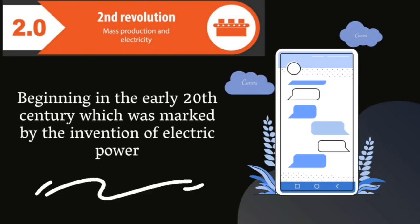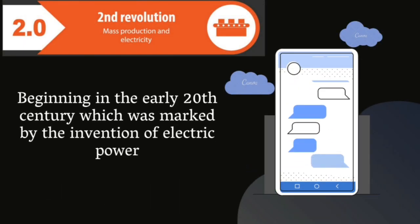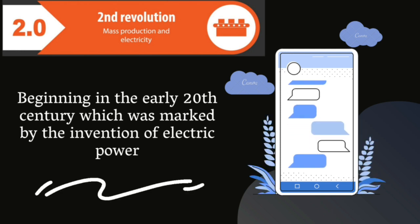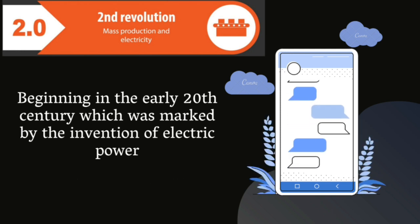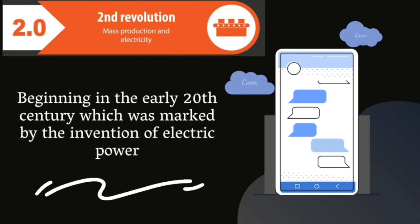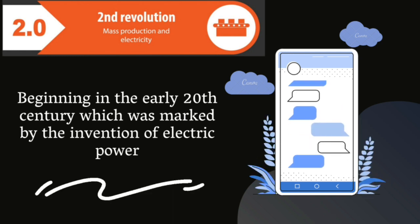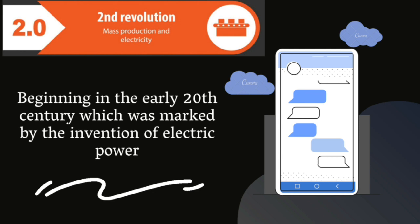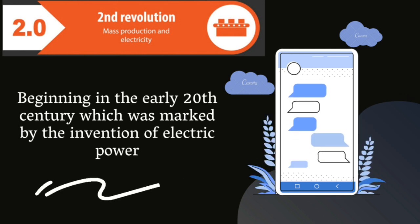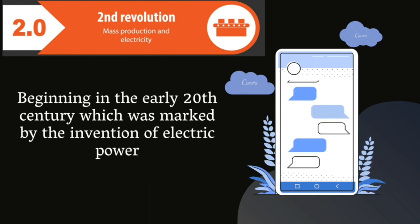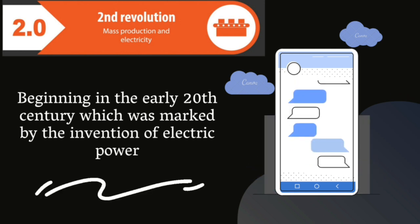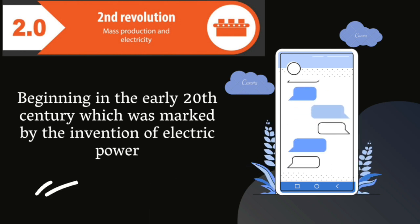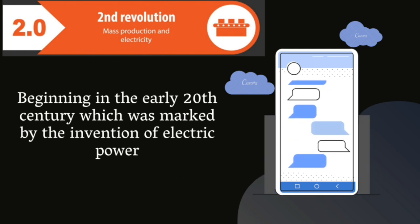The industrial revolution 2.0 occurred in the early 20th century, marked by the invention of electricity. In this era, an assembly line using a conveyor belt was created in 1913, which changed the way of production. Car assembly was also assisted with tools using electric power, which was much cheaper and easier than the steam engine.